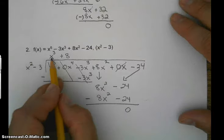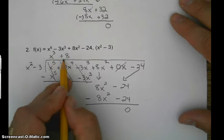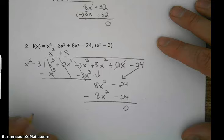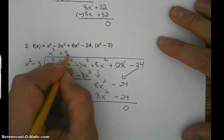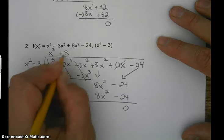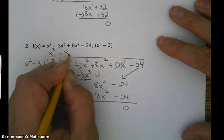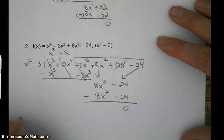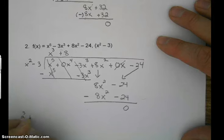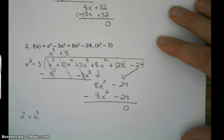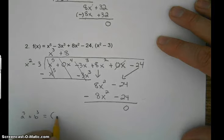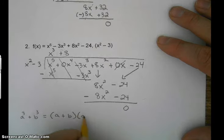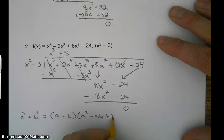Now, what do we have left over? We have x cubed plus 8. How do we factor that? Well, this is the sum of two cubes. So if you remember the rule that states a cubed plus b cubed, if we have a problem like that, it factors to a plus b times a squared minus ab plus b squared.